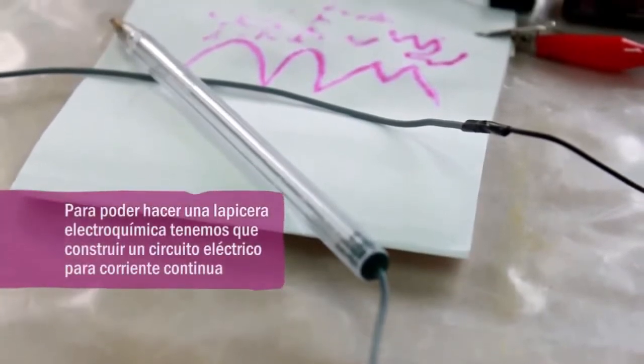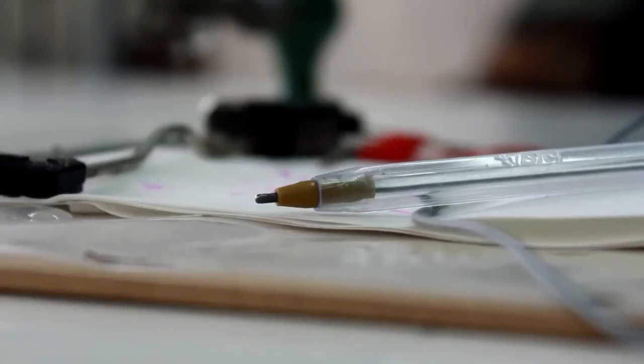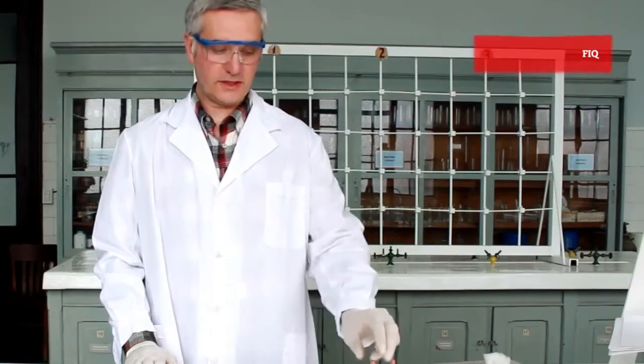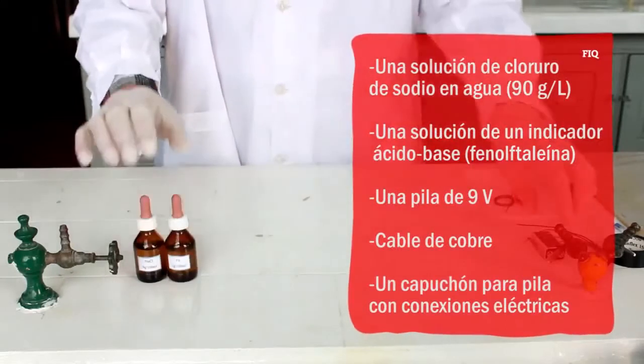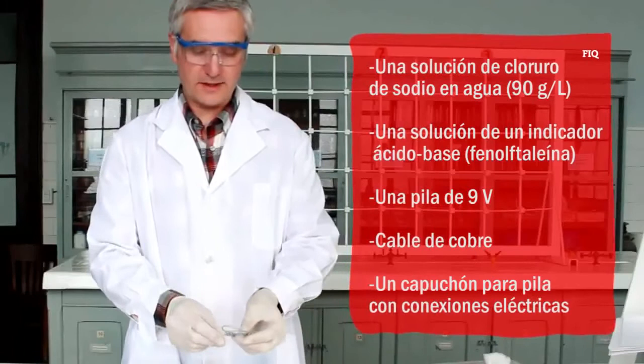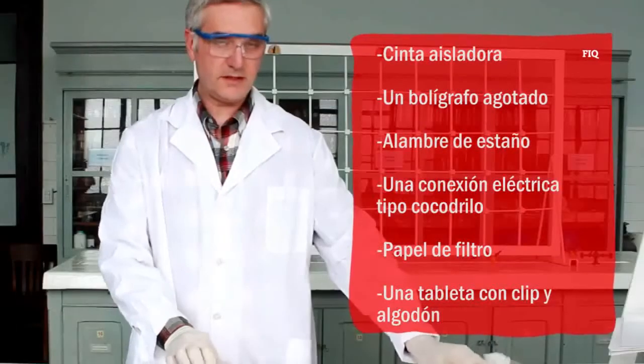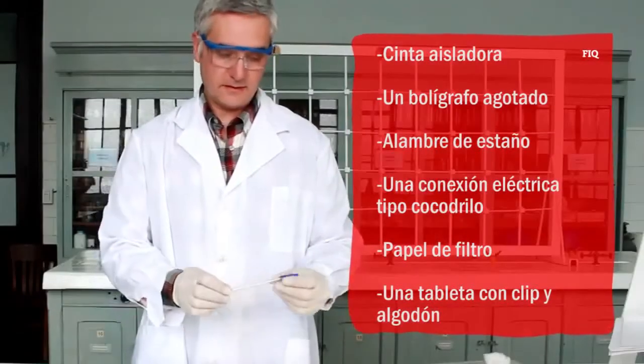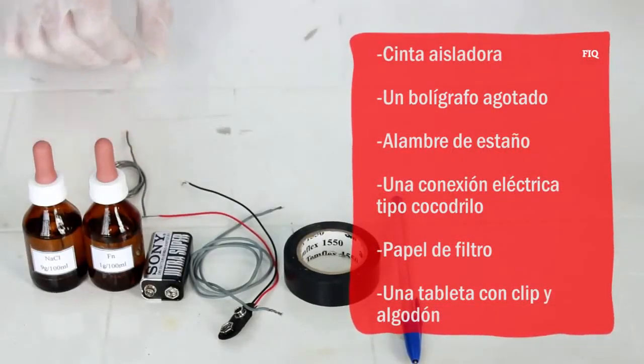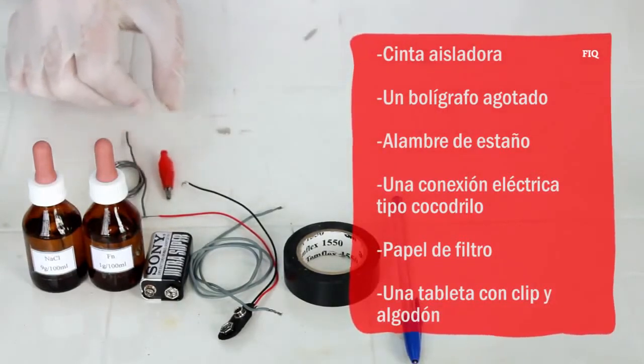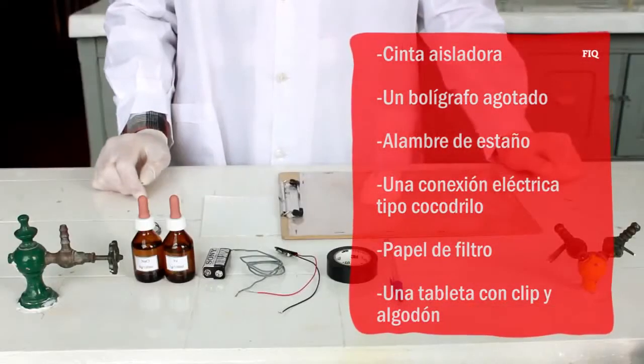Para poder hacer una lapicera electroquímica tenemos que construir un circuito eléctrico para corriente continua. Para eso vamos a necesitar una solución de cloruro de sodio en agua, solución de indicador de fenolftaleína, una pila de 9 voltios, cable común de los usados en la vida diaria, un conector para la pila con terminales eléctricos, cinta de aislar, una lapicera agotada sin tinta, alambre de estaño de los usados para soldar, un terminal tipo cocodrilo, papel de filtro, una tableta con sujetador y un poquito de algodón.